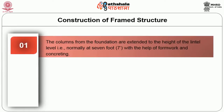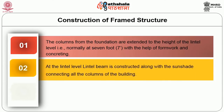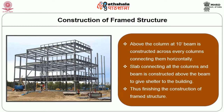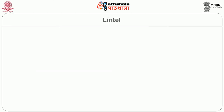Construction of the framed structure: the columns from the foundation are extended to the height of the lintel level, normally at 7 foot, with the help of formwork and concrete. At the lintel level, the lintel beam is constructed along with the sunshade connecting all the columns of the building. Above the lintel level, the column is extended to the roof level — about 3 foot from the lintel beam. Above the column at 10 foot, beams are constructed across every column connecting them horizontally. The slab connecting all the columns is constructed above the beam to give shelter to the building, thus finishing the construction of the framed structure.